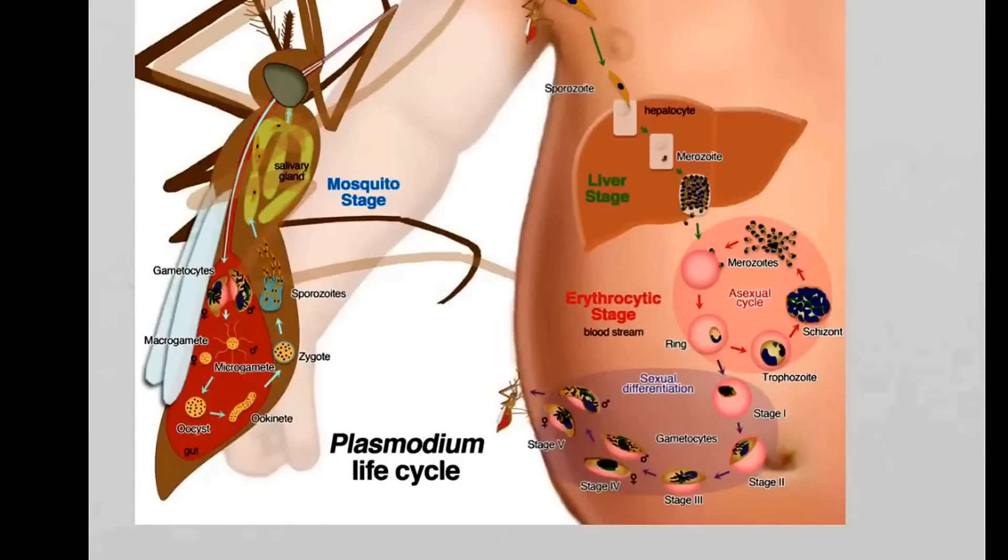In the liver, these sporozoites will invade the liver cells. Liver cells are also called hepatocytes. So in the liver, these sporozoites will invade the liver cells and they will multiply. They will double, triple, quadruple and invade these liver cells. And they turn into what is called the merozoite. Don't worry too much about the names; it is more important that you understand the principle.